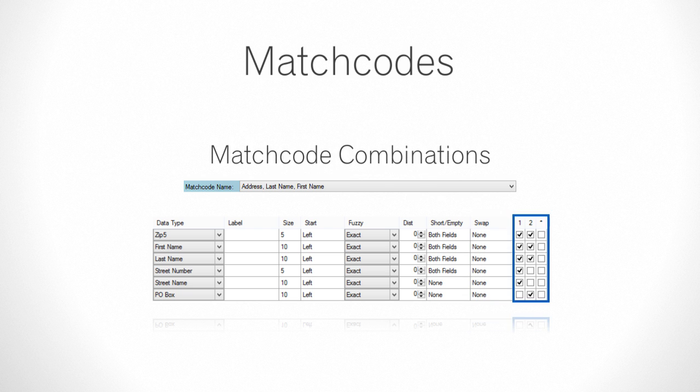Match Code Combinations. The question most often asked about the Match Code Editor is: what are these columns of checkboxes? Each column represents a condition or combination of components which will cause a match. So in this case, Match Code Combination 1 would return true if zip 5, first name, last name, street number, and street name all match.